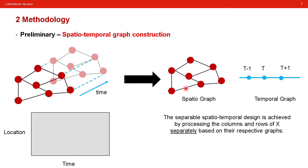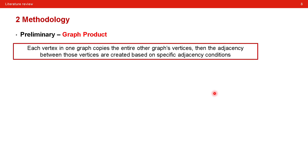For the spatial graph, they only consider the spatial correlation — the fixed topology in a transportation network or the skeleton of a human body. The temporal graph captures the temporal correlation, which is the relationship between different time steps. In addition, this paper further suggests spatial-temporal joint graph construction by introducing graph products — an operator between two graphs where each vertex in one graph copies the entire other graph's vertices, and adjacencies are created based on specific conditions.